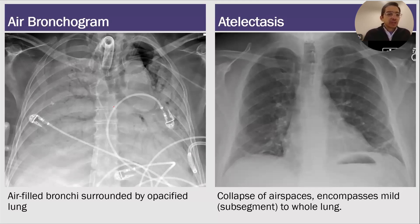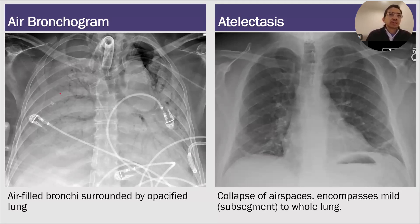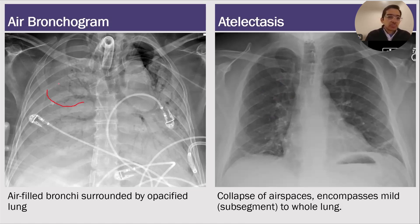Air bronchogram. An air bronchogram is a tubular lucent structure — it's a bronchus that you see in profile with the surrounding lung. In a normal patient, you can't really see the bronchi that well. Notice in this patient with atelectasis on the right, we don't really see the bronchi. But in this patient, we see the bronchi because the lung surrounding the bronchus is abnormal.